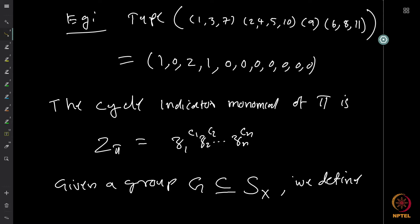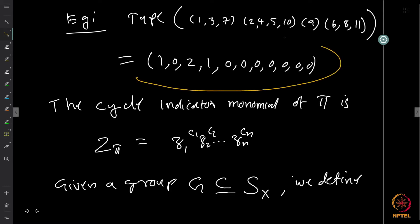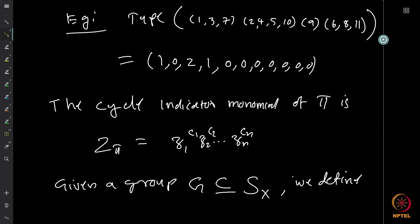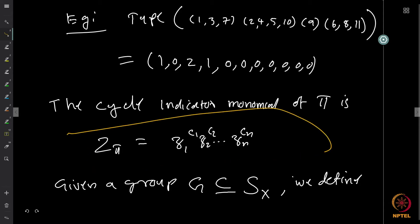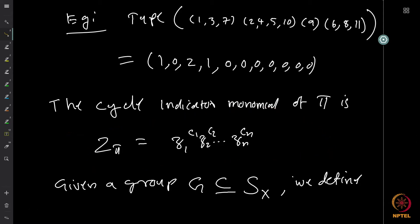Once we have such a type, we can define the cycle indicator monomial. Z_π equals z₁^c₁ · z₂^c₂ · ... · zₙ^cₙ. This immediately tells us the cycle structure: the exponent of zᵢ tells you the number of i-cycles in the permutation π.